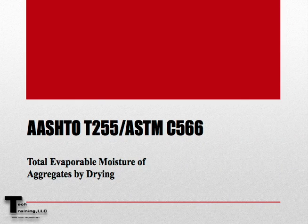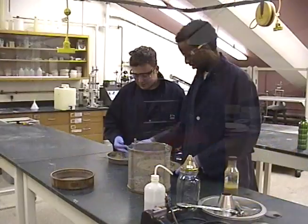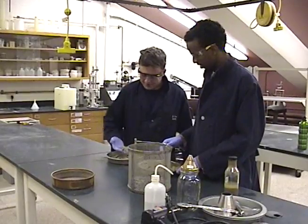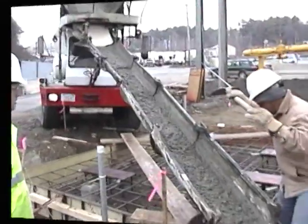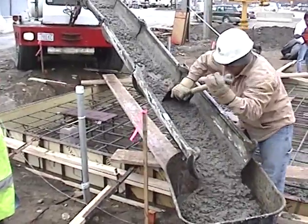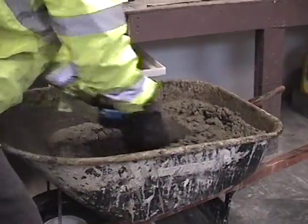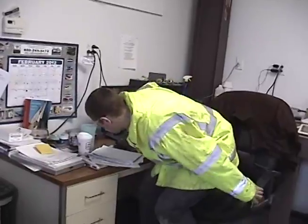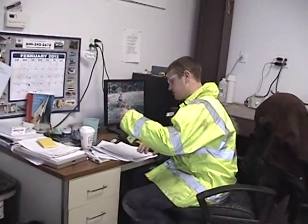AASHTO T255 and ASTM C566 are the standard methods of test for total evaporable moisture of aggregates by drying. Determining the moisture content of your aggregates is critical to maintaining quality and uniformity in batch-to-batch concrete production. The designed batch weights must be adjusted if there is a change in the total evaporable moisture content of the aggregates.